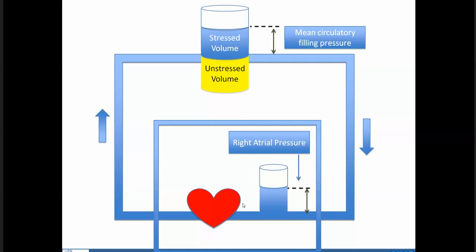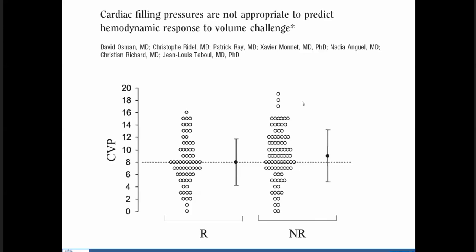A healthy heart tries to keep CVP as low as possible — a healthy person normally runs on CVP values close to zero. The rationale of giving fluids is not to increase CVP; it is to increase the stressed volume and hopefully increase the gradient for venous return. It's therefore not surprising that absolute CVP values do not predict which patients will respond with an increase in cardiac output when we give fluids.